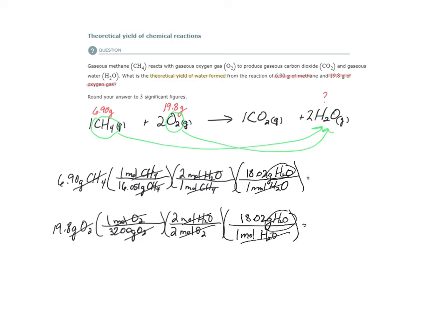So the only thing left to do now is the math. 6.9, open parentheses, 1 over 16.051, close, 2 over 1 times 18.02 over 1. That gives me 15.493 grams of water. And for oxygen, 19.8, open parentheses, 1 over 32, 2 over 2, 18.02 divided by 1. I get 11.1499 grams of water.